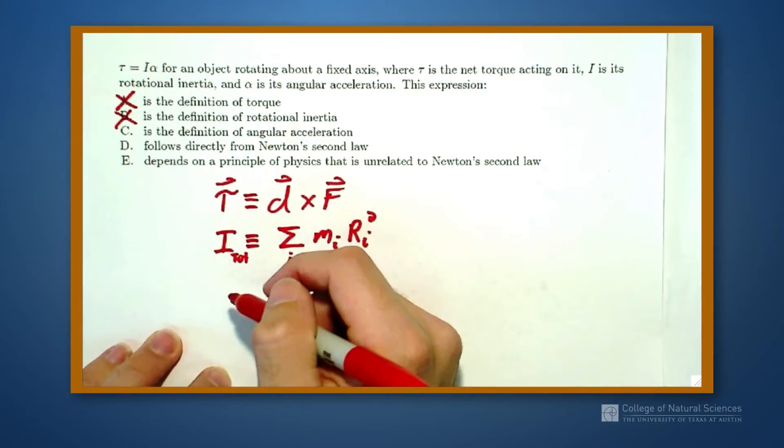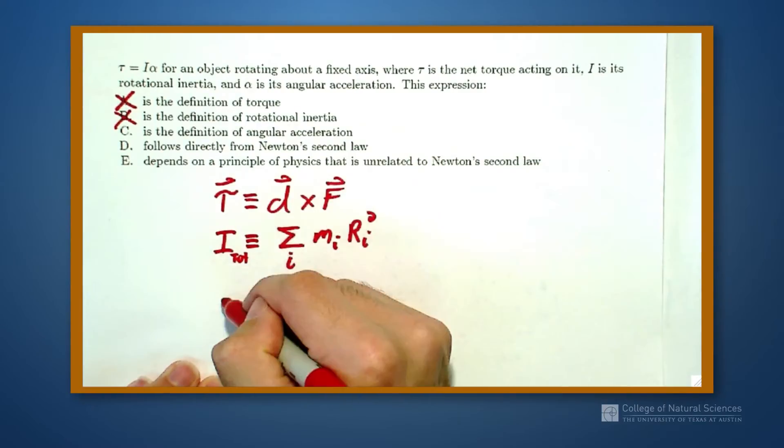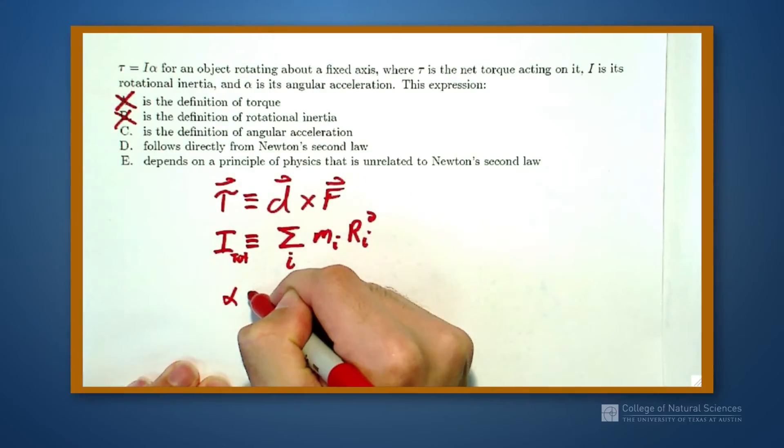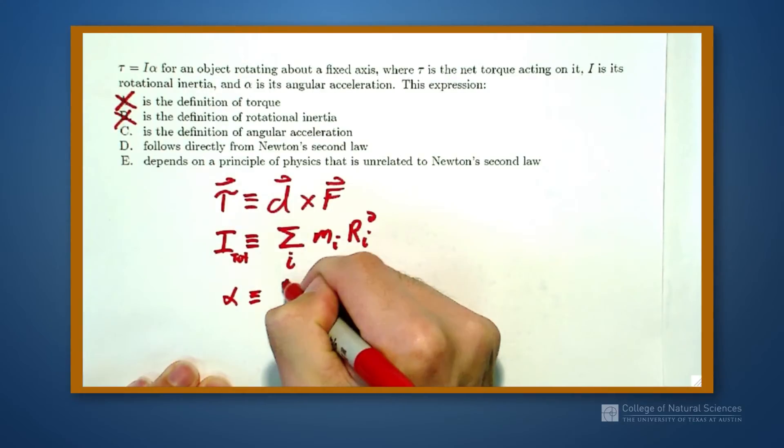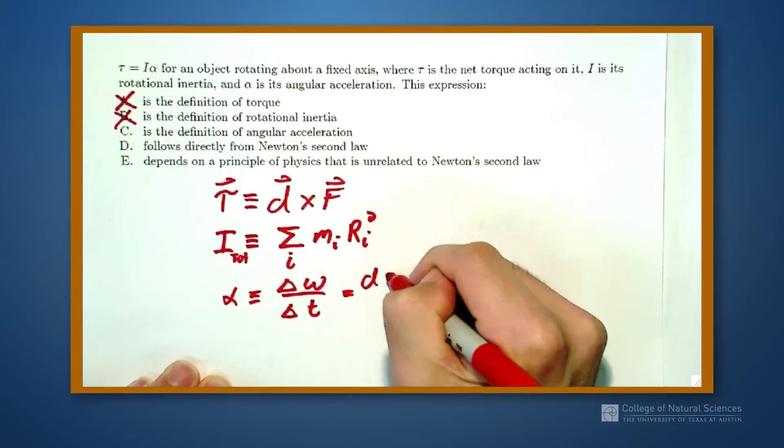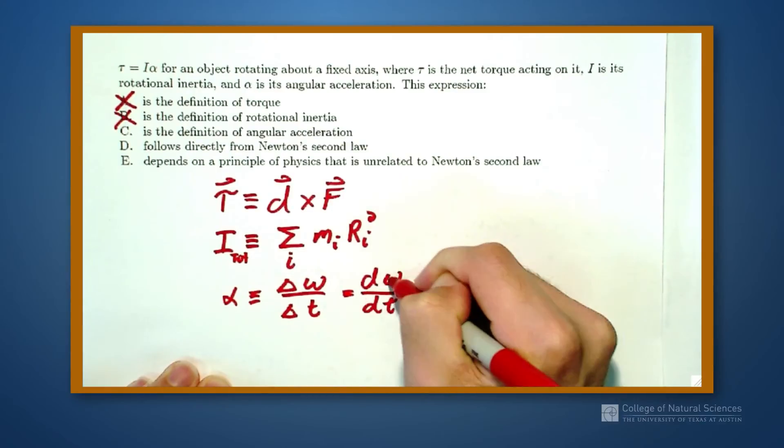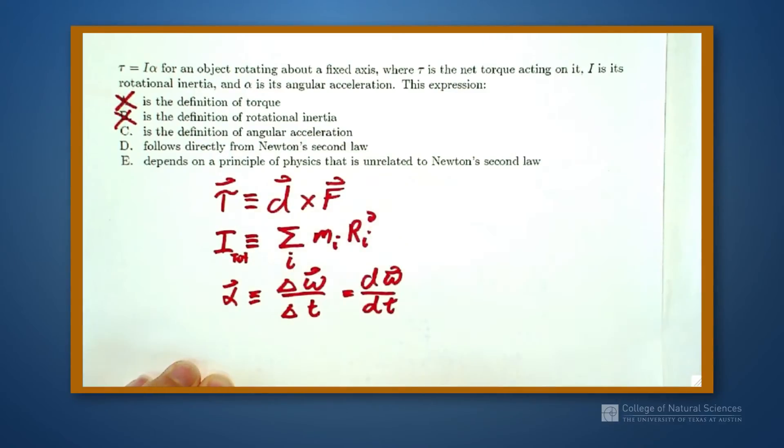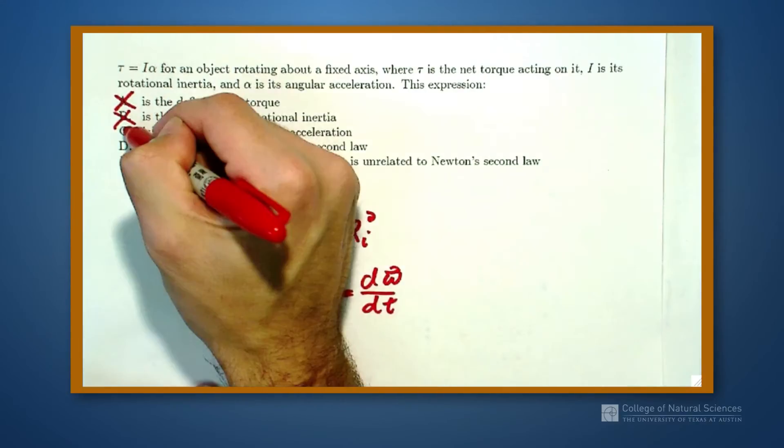Well, the definition of angular acceleration. Angular acceleration is defined as how fast the angular velocity changes, which we can write as d omega dt, and it is a vector equation, the change of omega in a change of time, or d omega dt if you like the calculus version of this. So C is wrong.